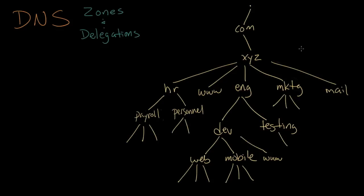By now, you should have a pretty good grasp of things like domains and subdomains. In fact, if you look at a picture like this, you should be able to see things like the XYZ domain, which is inside of com, which is underneath the root domain. But to really understand DNS, you have to learn about zones and delegations, and they're a little bit different than domains.